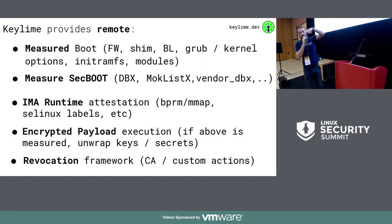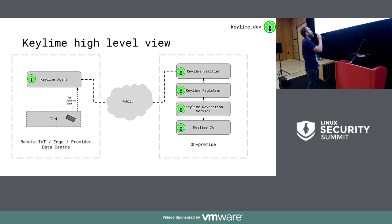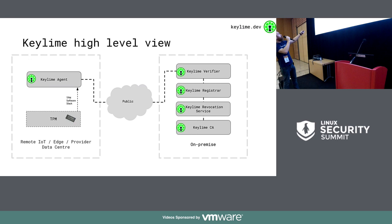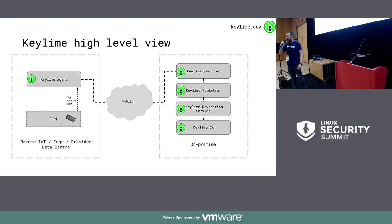Let's look at the architecture. To the right is the Wild West — the untrusted network. To the left is on-premise — within your control, your network, somewhere you trust. And to the right we have something called the agent, which runs on the node you're measuring.